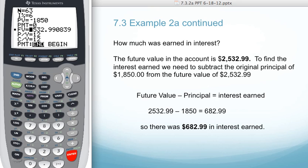So how much was earned in interest? The future value in the account that we just determined was $2,532.99. Subtracting off the original principal of $1,850,